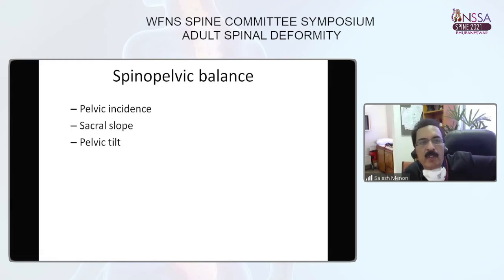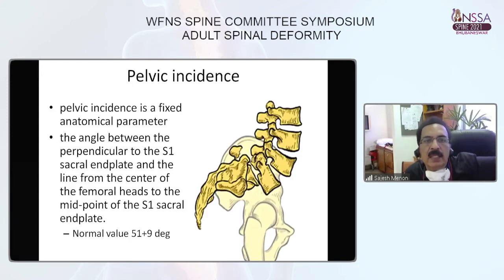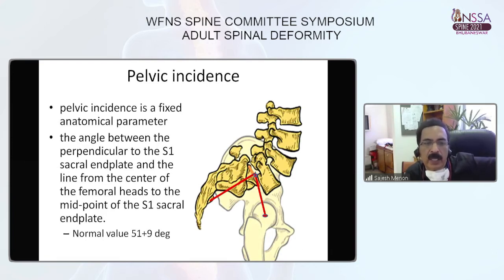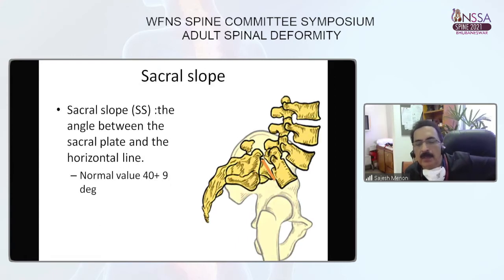For spino-pelvic balance, we can measure three parameters: pelvic incidence, sacral slope, and pelvic tilt. Pelvic incidence is a fixed anatomical parameter measured by a line drawn from the midpoint of the sacral endplate to the femoral head, and another line perpendicular to the sacral endplate. The angle between these lines is the pelvic incidence angle, with a normal value of 51 plus or minus 9 degrees.